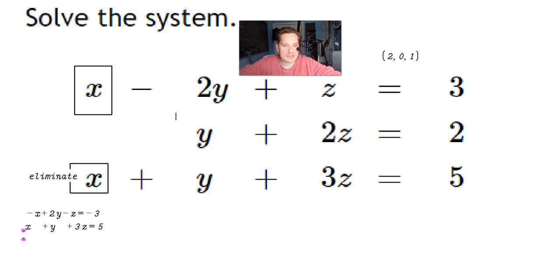When you add these, what do we get? We're going to add straight down term by term, basic operations. Negative x plus x is 0. 2y plus y is 3y. And then negative z plus 3z is going to give you positive 2z.